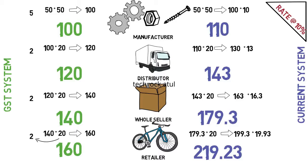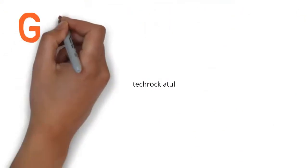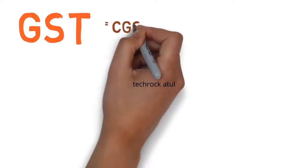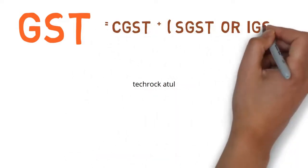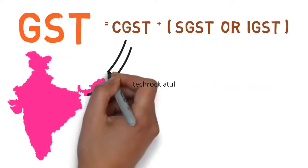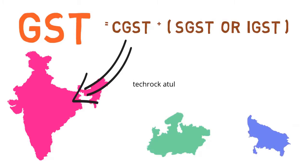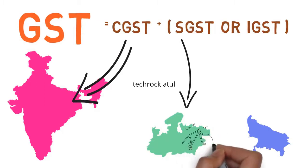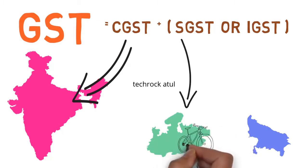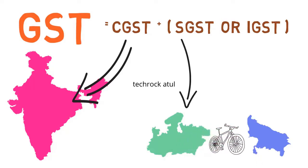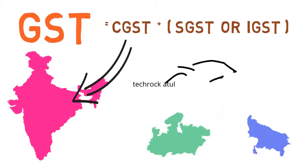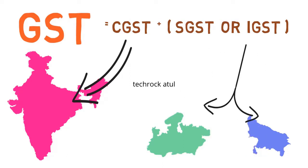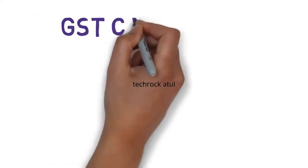Let's look at GST in detail. GST is a combination of CGST and SGST, or IGST. CGST is Central GST, which is paid to the central government. SGST is State GST, which is paid to the state government. IGST is Integrated GST, which applies when goods and services move interstate. For example, if a product is manufactured in Madhya Pradesh and sold in another state, IGST applies and is distributed between both states; SGST will not be collected in that case.